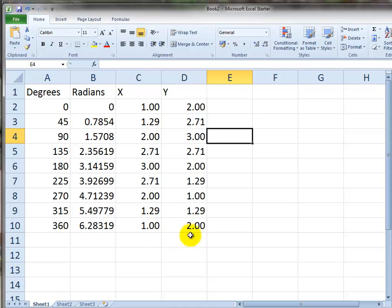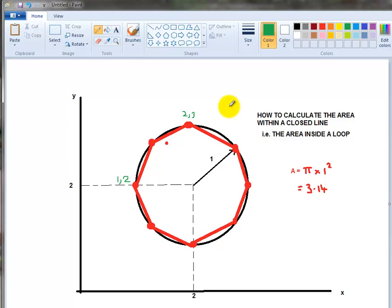And now let's work out the area inside that loop. So we need a column here for the delta areas, the little areas inside each trapezoidal section. Now what do I mean by that?